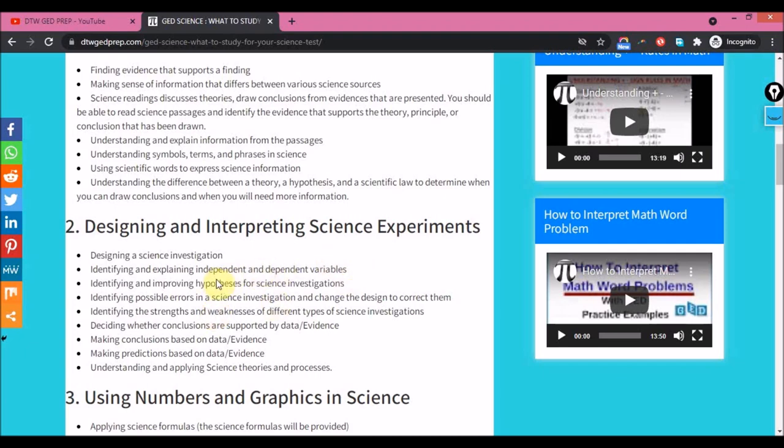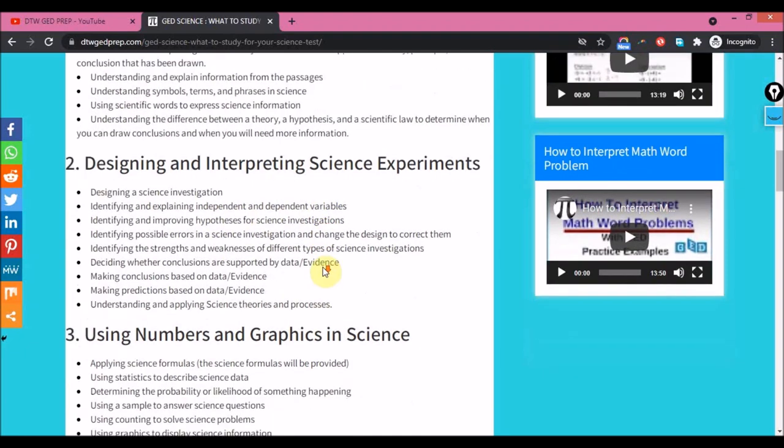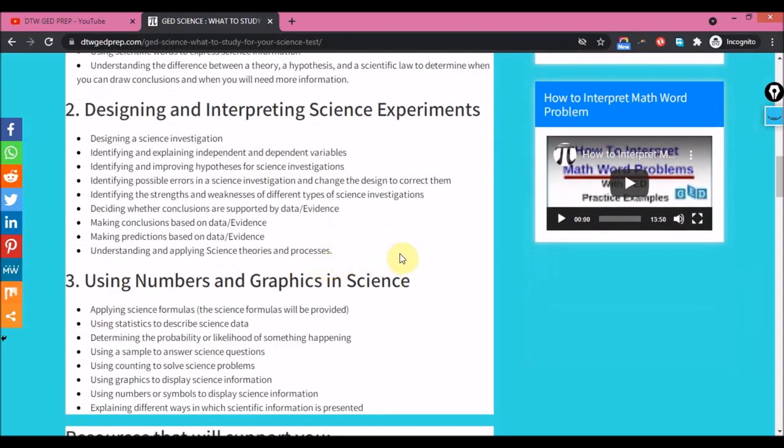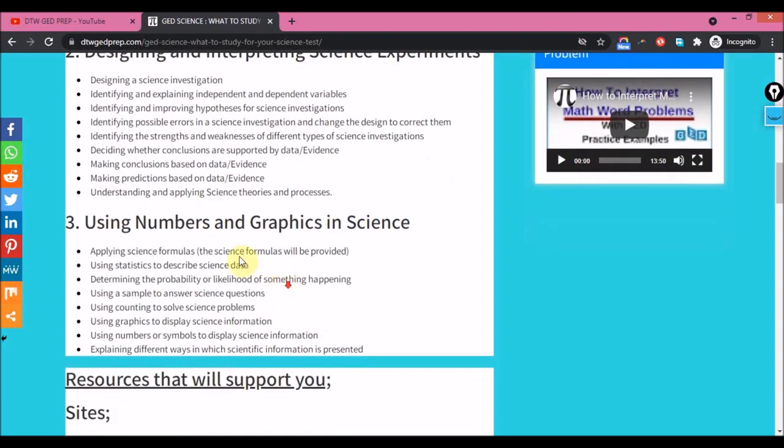You should know what the dependent variable is and what an independent variable is. You should be able to make conclusions based on your data, evidence given in the science text, that's the passage that will be given to you. Understanding and applying science theories and processes. So that's the second skill to know.